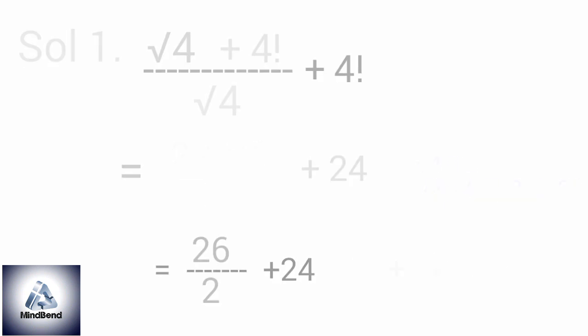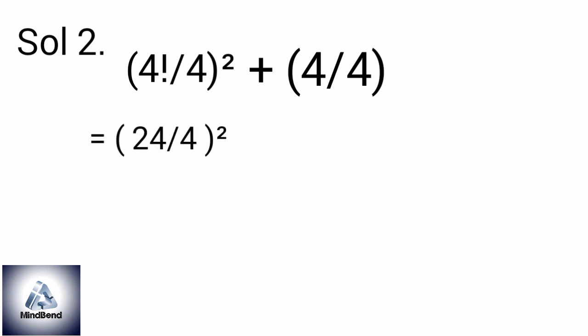The other solution is: take the 4 factorial, divide it by 4, take the square, add 4 divided by 4. As 4 factorial is 24, it becomes 24 by 4 whole square plus 1, which becomes 6 square plus 1. That results in 37.